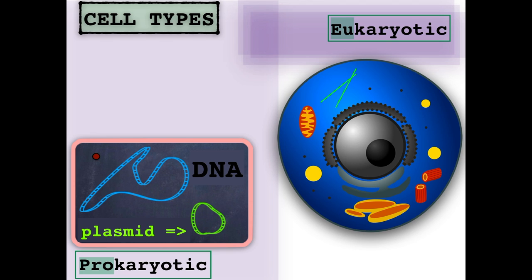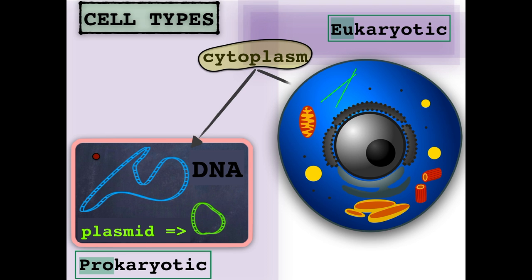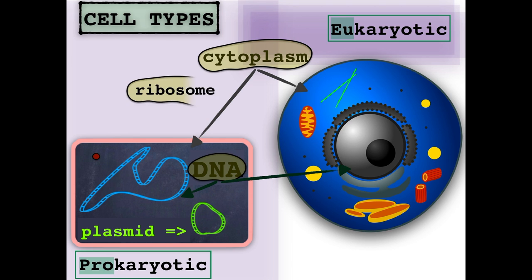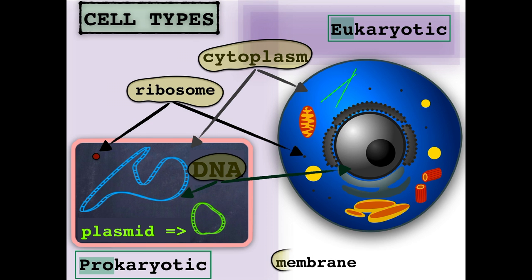Both cell types share some similar features, such as having a cytoplasm which fills up the cell, they have DNA, ribosomes which are the structures responsible for protein synthesis, and both cell types are surrounded by a cell membrane.